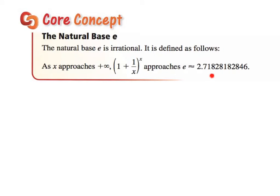So e is approximately this number right here: 2.71828. E is irrational. As x approaches positive infinity, this expression approaches the value of e.